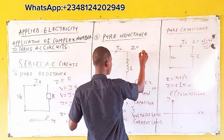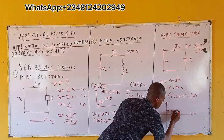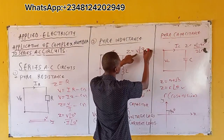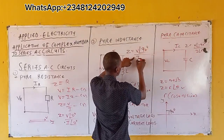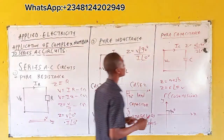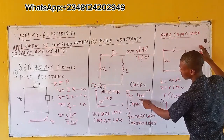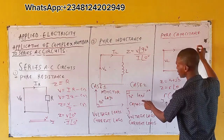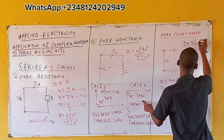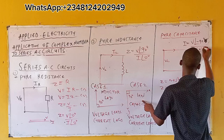Your voltage is leading by 90 degrees, so Z equals V∠90° divided by I∠0°. Similarly for capacitance — case two — what happens to voltage? It is lagging, meaning voltage is lagging by 90 degrees, giving Z equals V∠−90° divided by I∠0°.